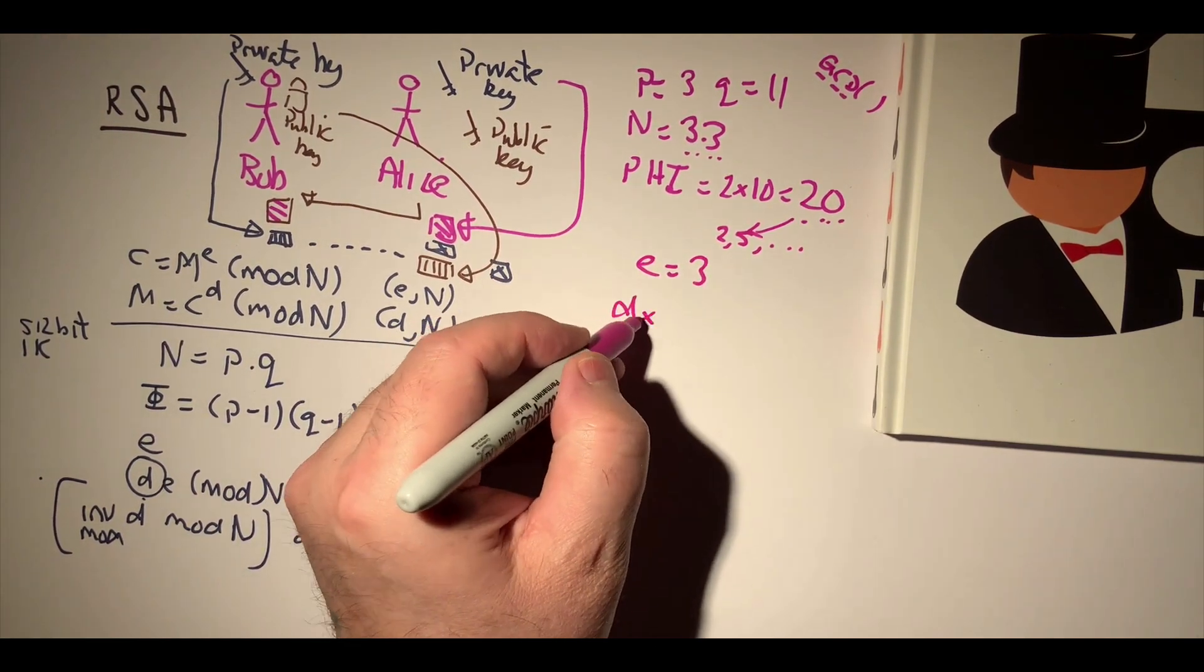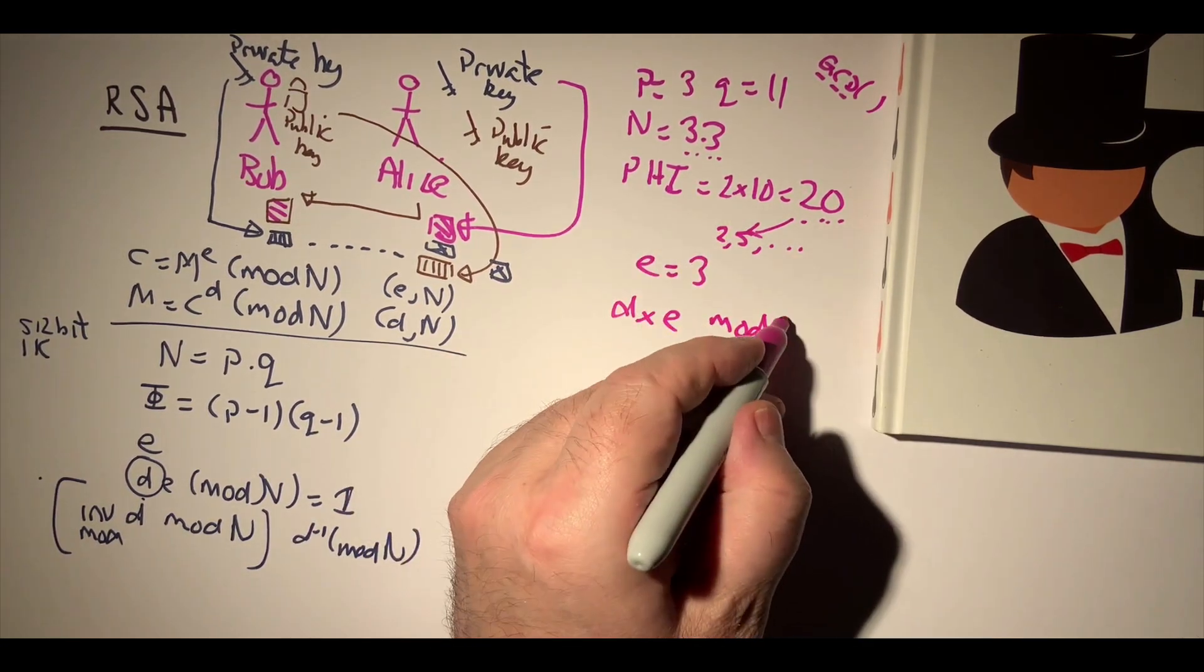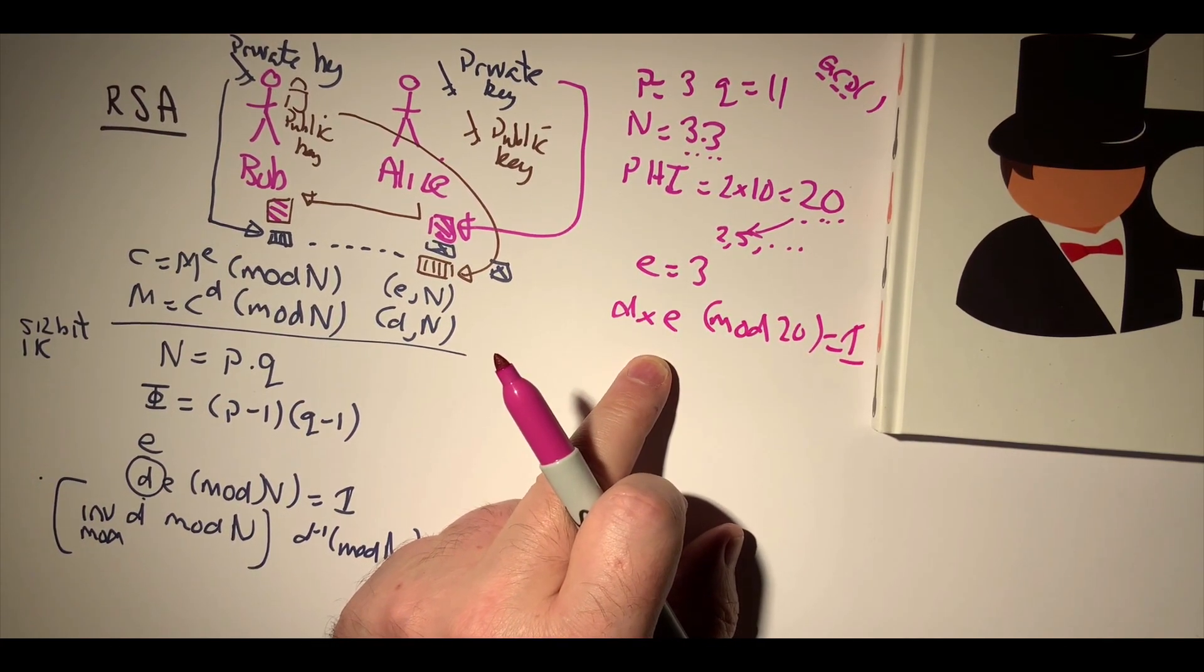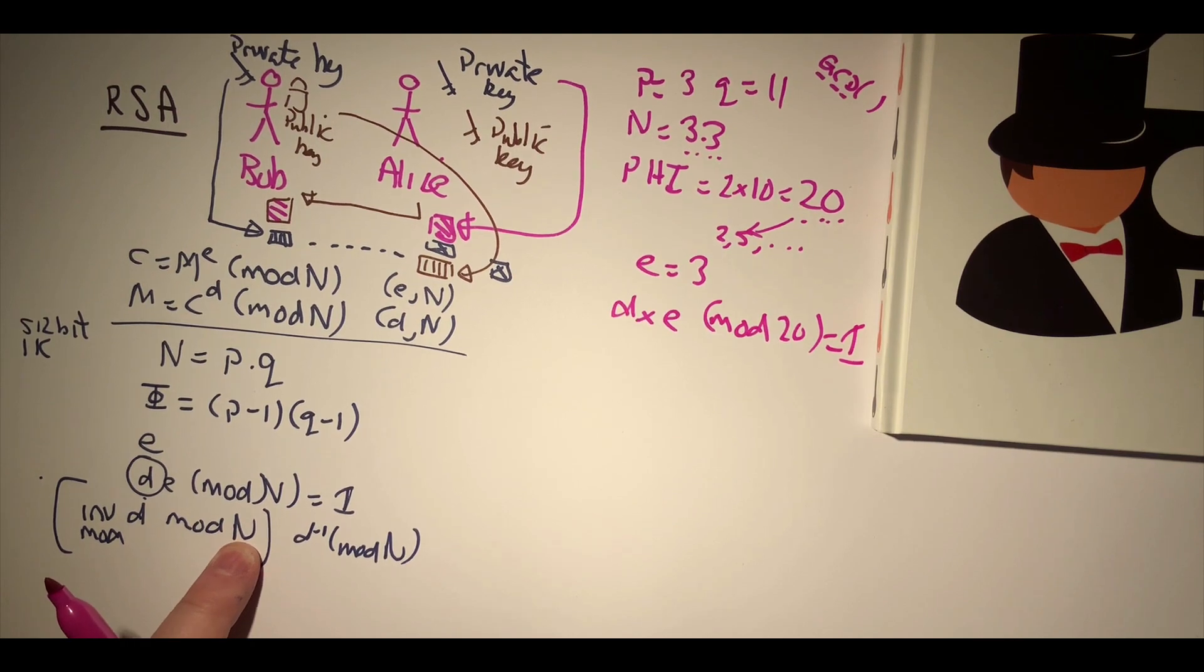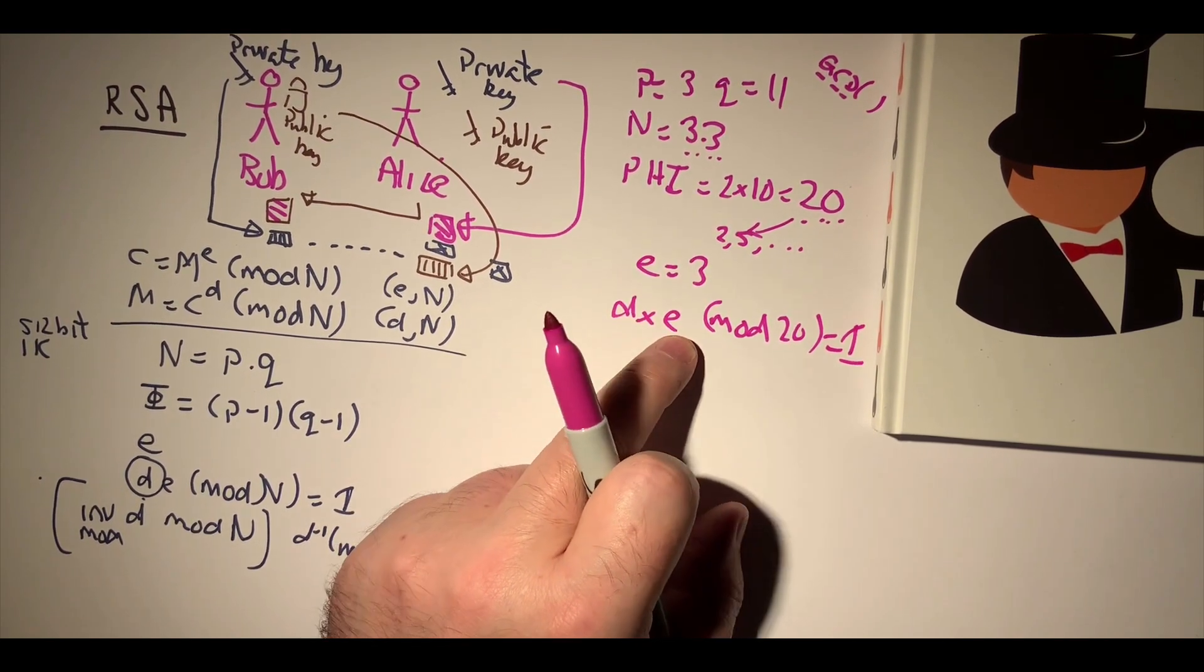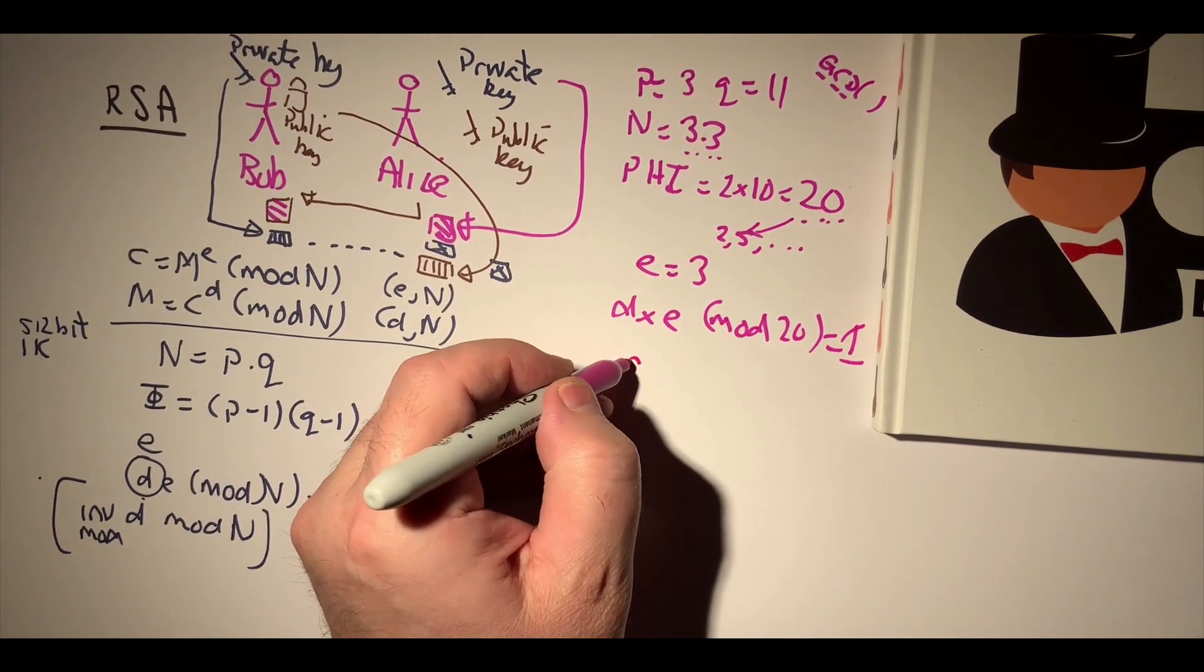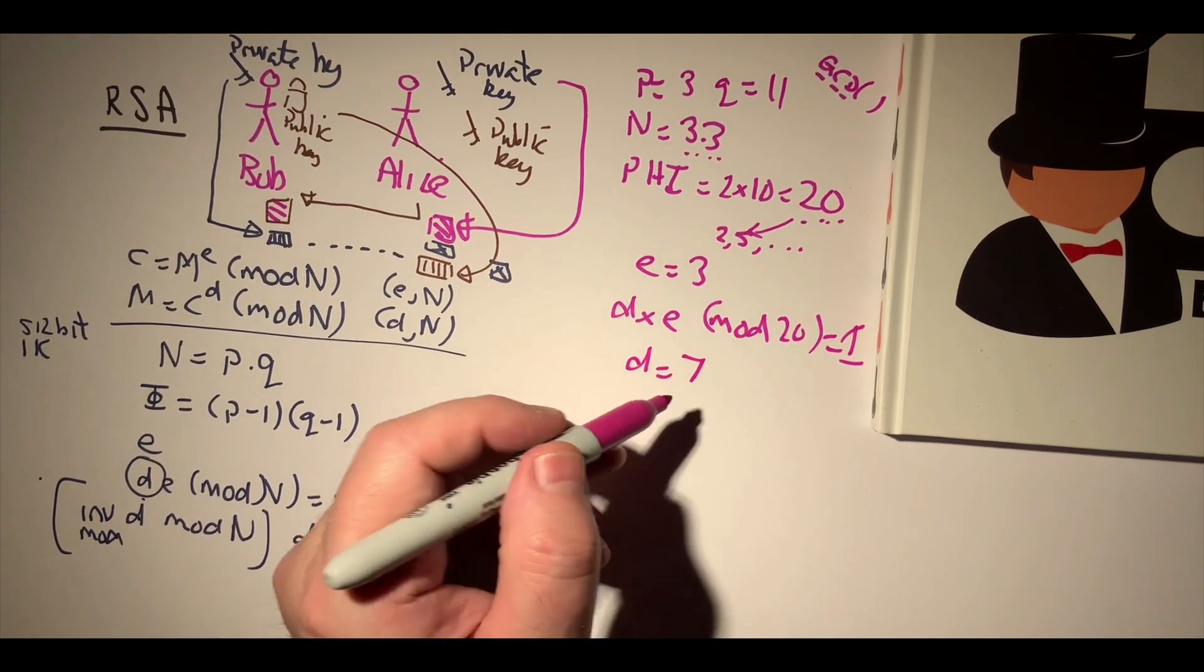Next we must make d times e mod of phi equal 1. We could do an inverse mod of d, inverse of d mod 20, to find that value easily. But we can actually see quite quickly that if the value of d is 7, and 7 times 3 is 21 mod 20, that gives us 1. So the value of d is equal to 7.